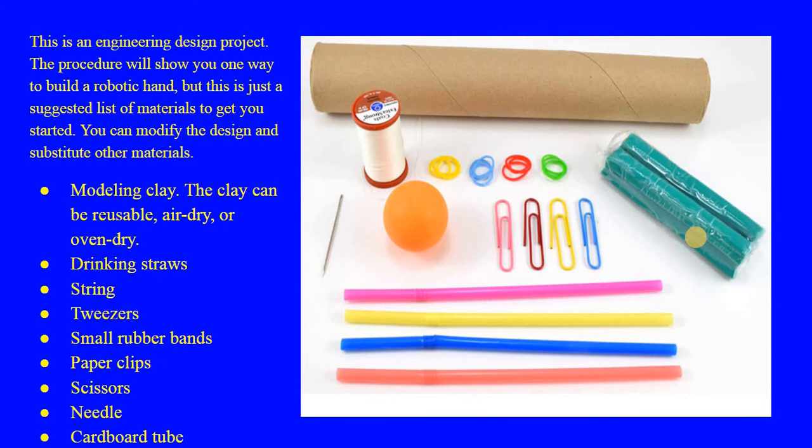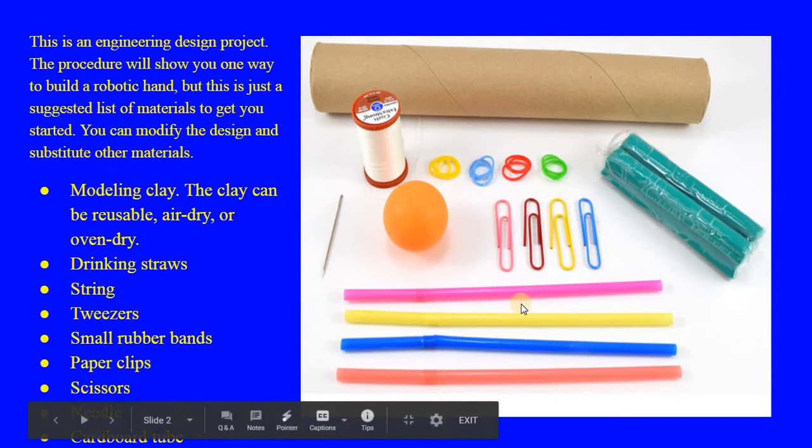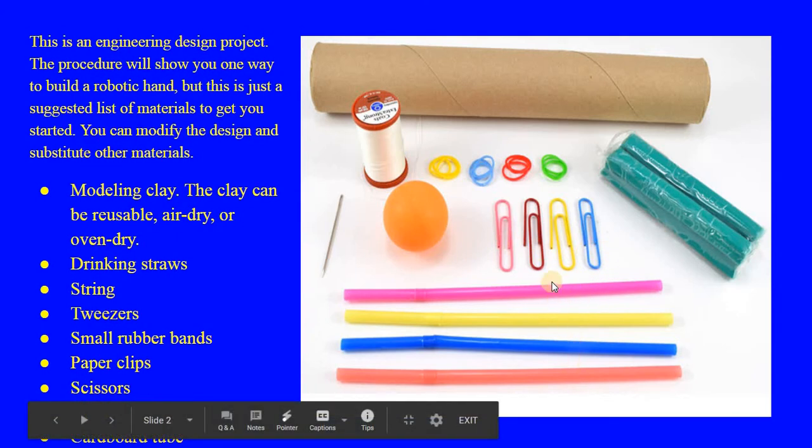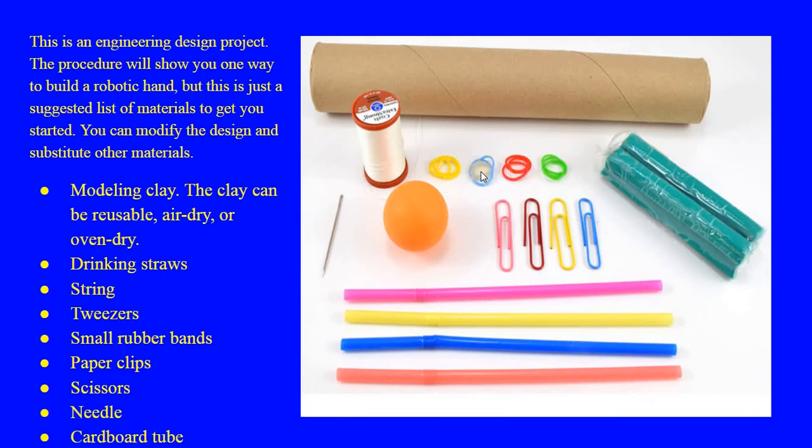So let's look at the materials you're gonna need. These are all suggestions. You're gonna need some modeling clay. If you don't have modeling clay, see what you can think of to use other than modeling clay. You're gonna need some paper clips. You will need the straws though. We cannot do this one without the straws. You will need some small rubber bands. This is a ping-pong ball and this is what we're gonna use at the very end to see if we can lift this. You will need some thread. You will need a needle and a cardboard roll. When you start working with this, please get your parents permission and adult supervision when you do the step that involves the needle. This is a suggested list. You can modify the design and substitute other materials after you watch the slides and see how it's built so you can get the general idea.